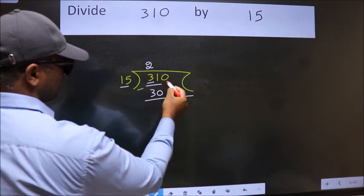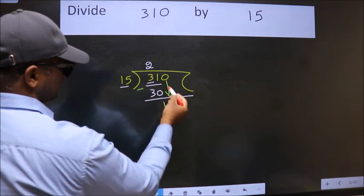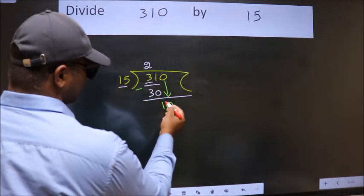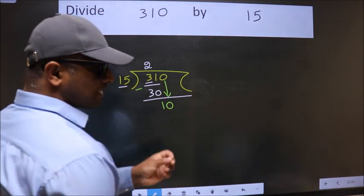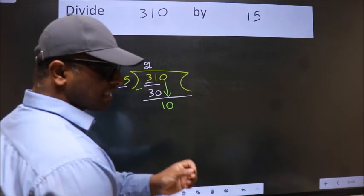After this, bring down the beside number. So, 0 down. After this step, the mistake happens. And the mistake is this.